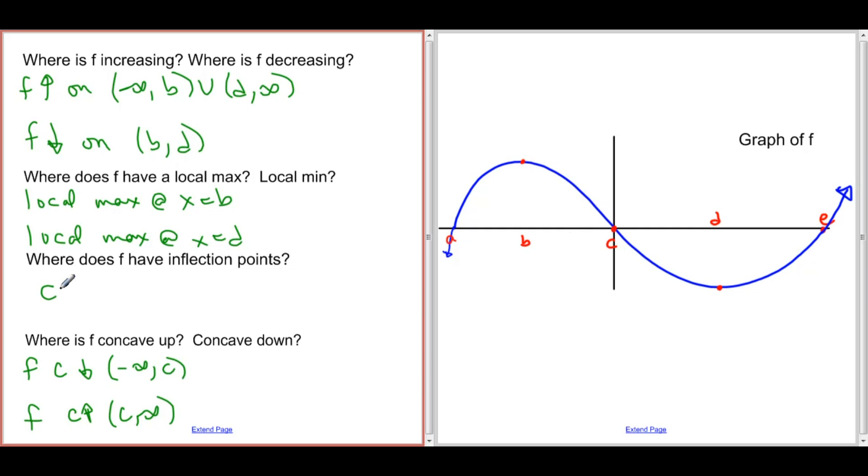So that means that x equals c is our inflection point because f double prime is negative, so f is concave down, to f double prime being positive, f is concave up. And looking at our graph,